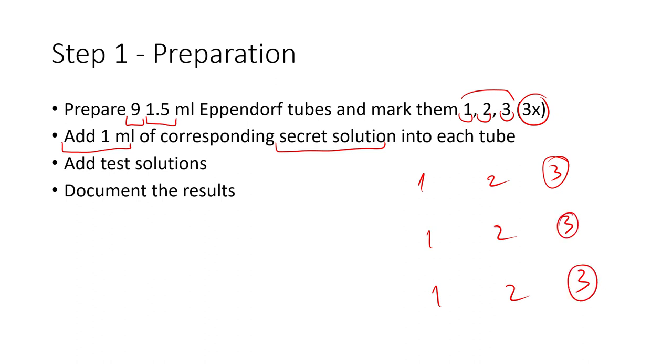Next, you add the test solutions row by row. For example, you take Benedict's solution for the first row. For the second row, you add Bradford, and to the third one, you add iodine.